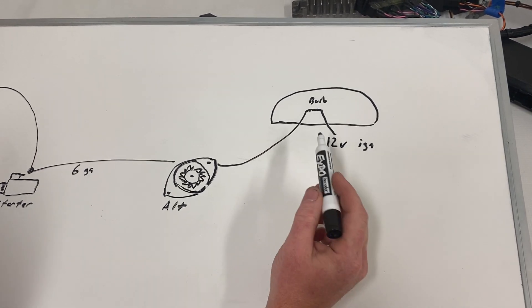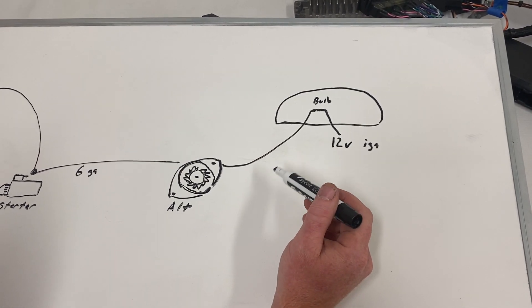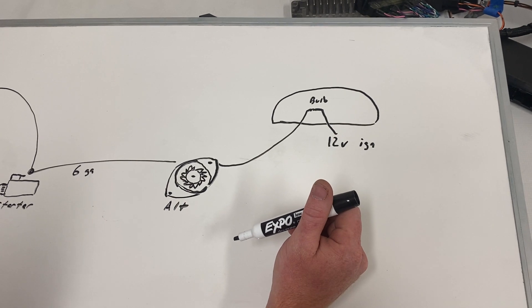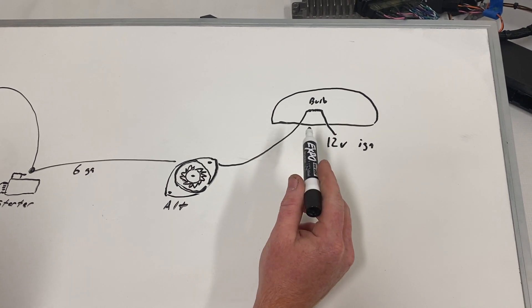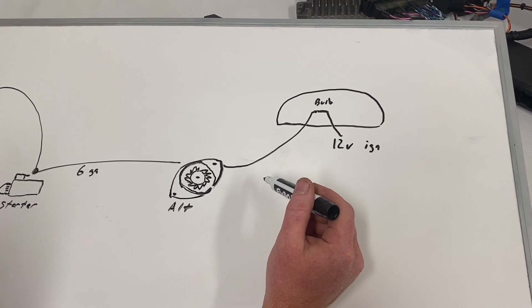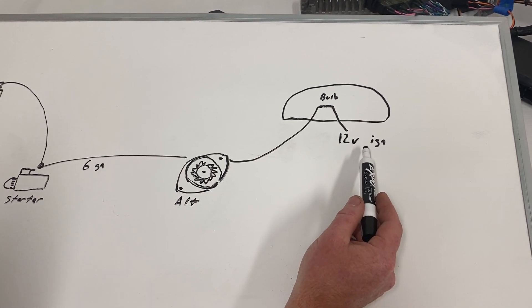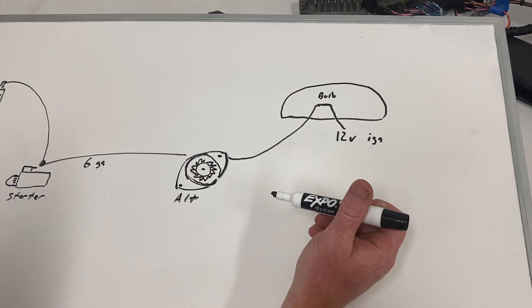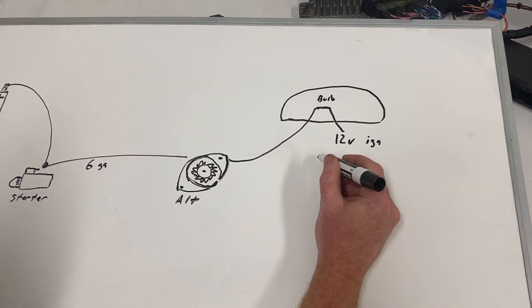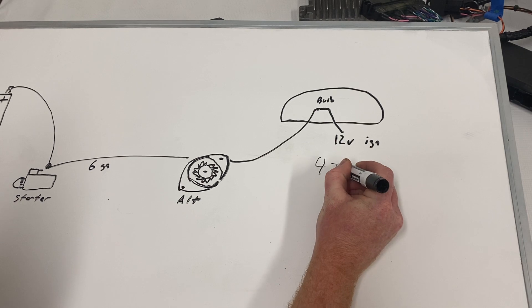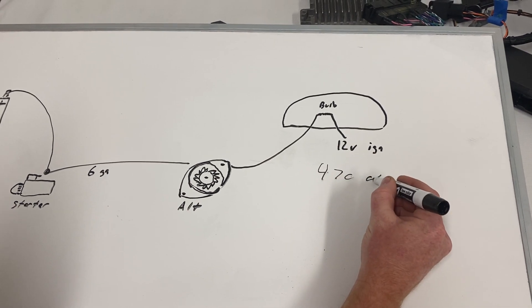So if you don't have a gauge cluster in the car anymore or you're running something like a CAN dash or maybe a tablet, you're going to need something to replace that bulb. Now you can either put a small bulb in it yourself and power one side of the bulb with your 12 volt ignition with the key on, or you can put a 470 ohm resistor in place.